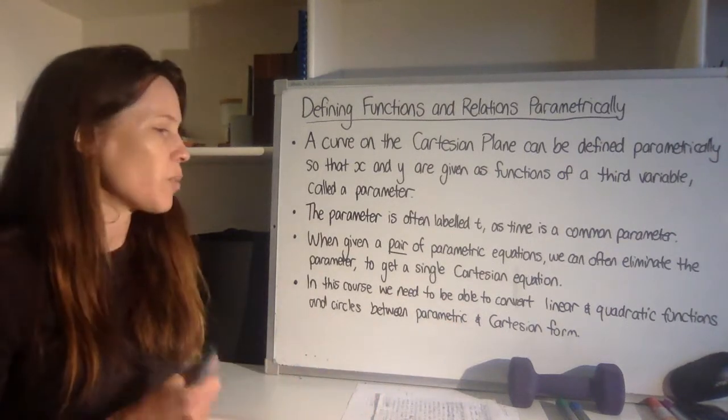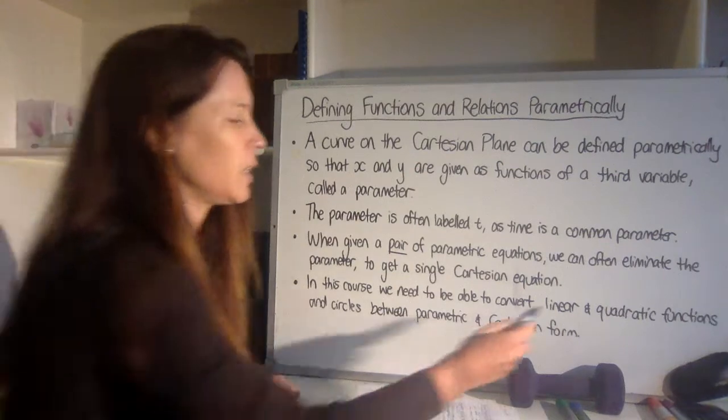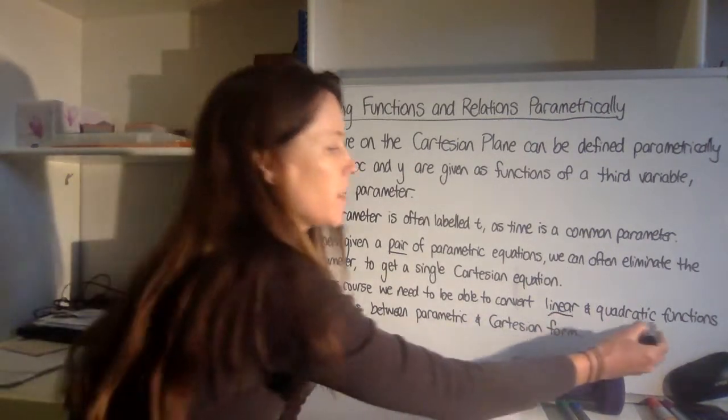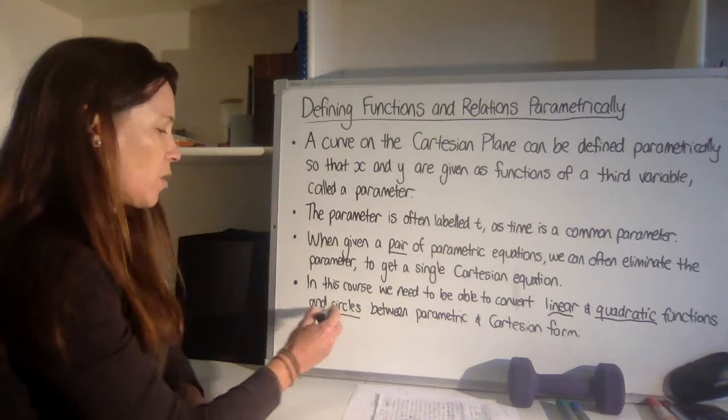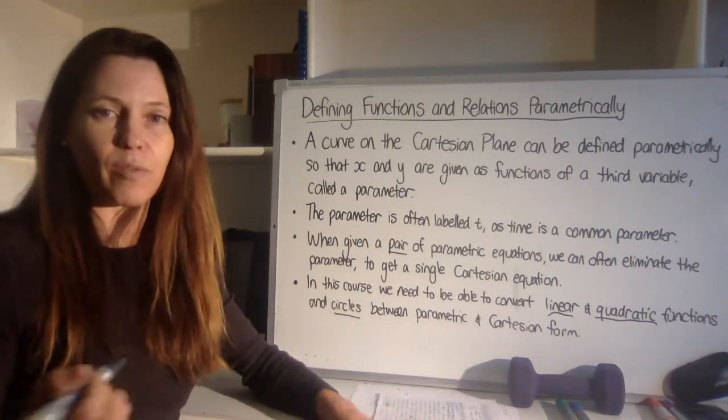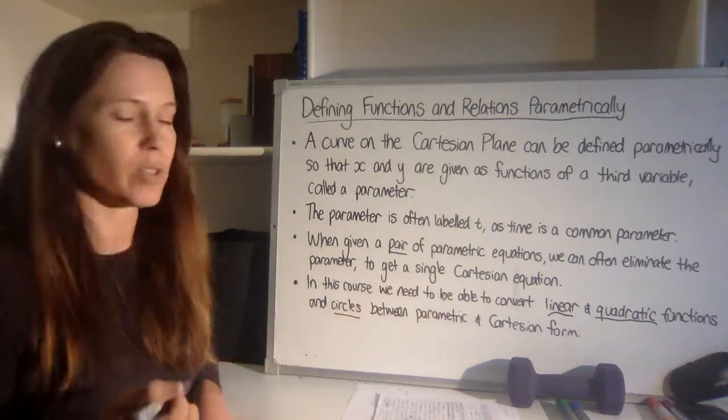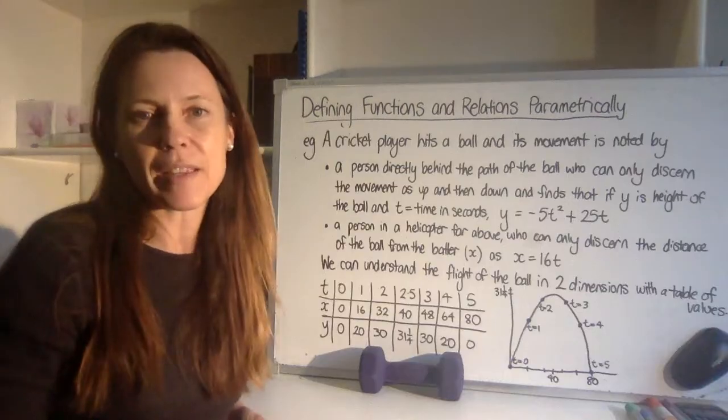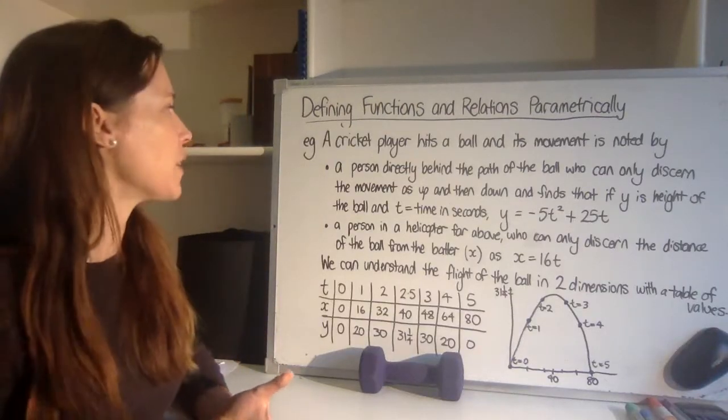Now, in this course, we need to be able to convert linear, so straight lines, quadratic, parabolas, and circles between parametric and Cartesian forms, so back and forth in either direction for any of those three different types. So I think the easiest way to understand this is to just look at an example.